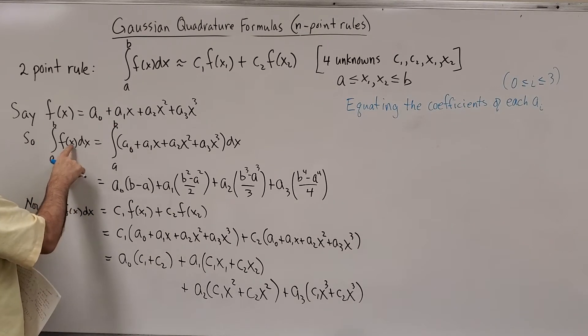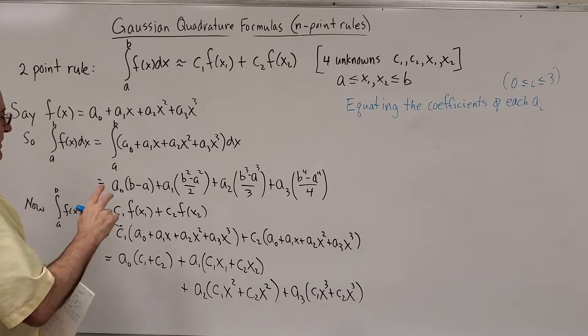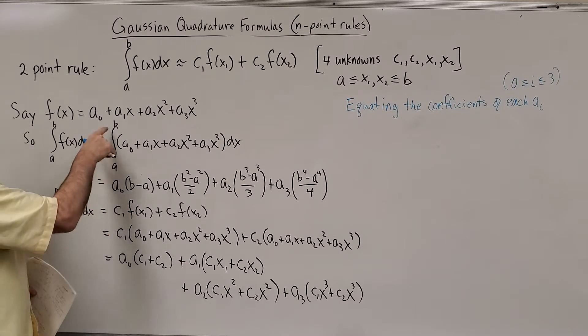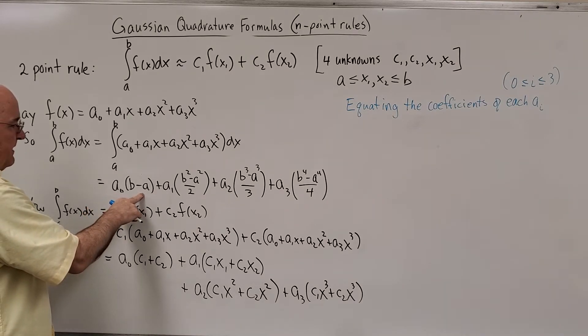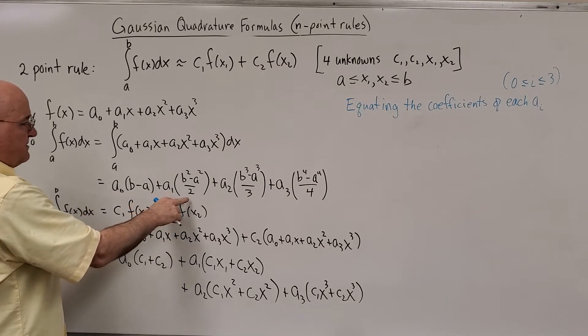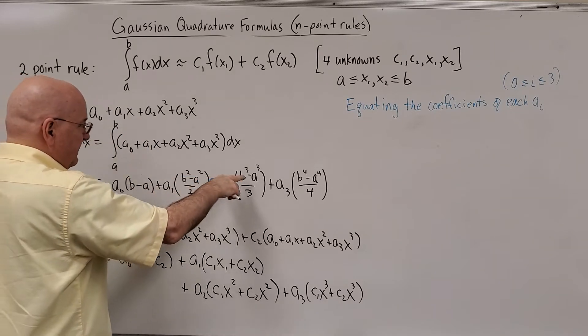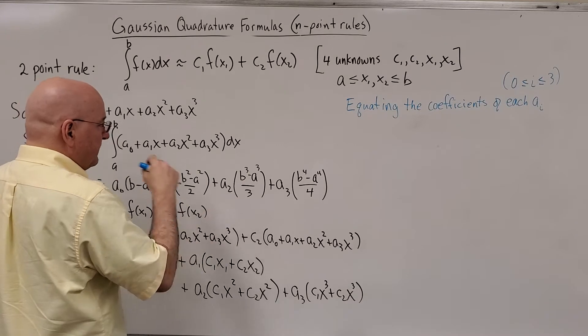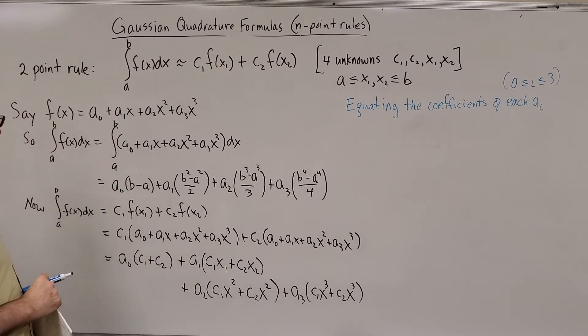And we know how to integrate this exactly. So the integral of F of X, this generic cubic, I integrated it and plugged it in from the limits A to B, and you get A0 times B minus A, A1 times B squared minus A squared over two, plus A2 times B cubed minus A cubed over three, plus A3 times B to the fourth minus A to the fourth over four.